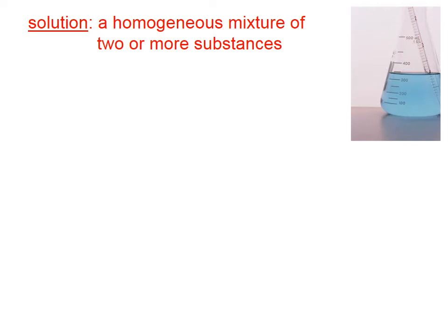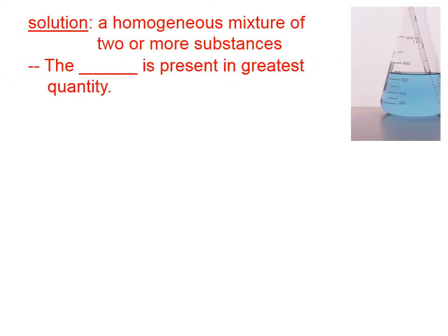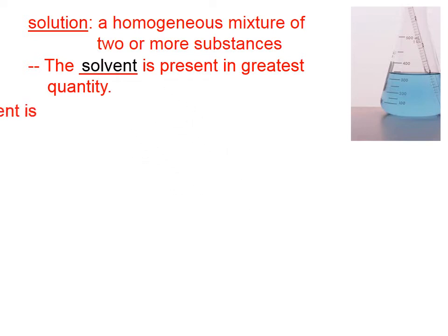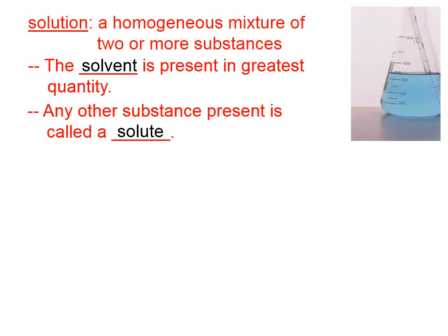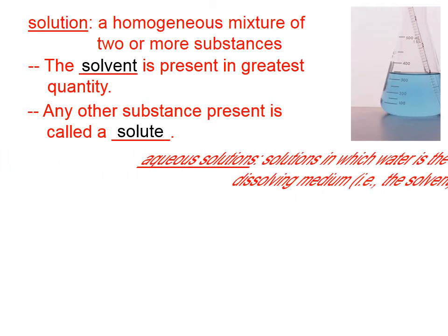A solution is a homogeneous mixture of two or more substances. The solvent is present in the greatest quantity, and any other substance present is called a solute. In any solution, there can only be one solvent. There might be more than one solute, but there's only one solvent.